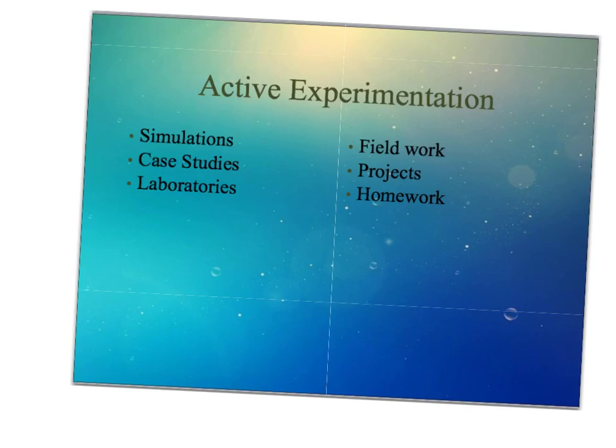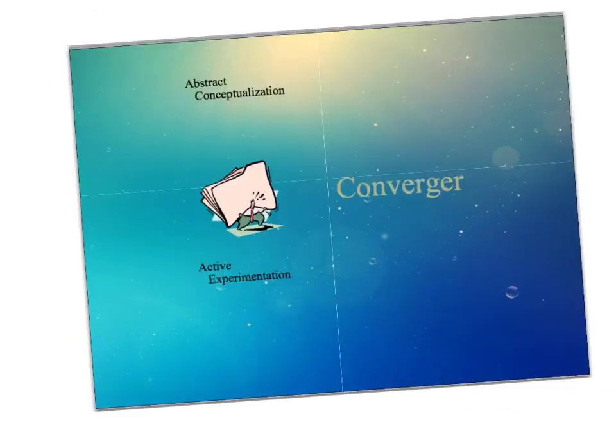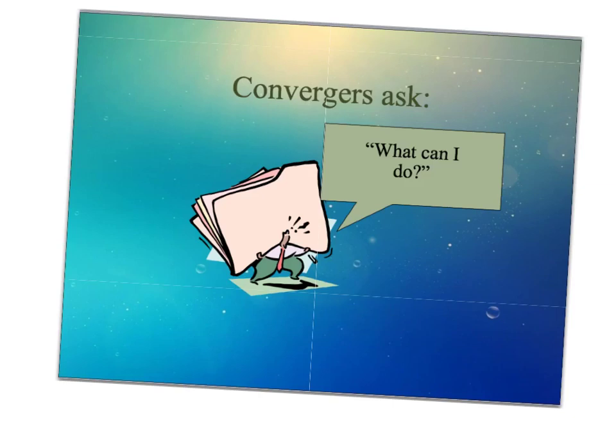Active experimentation examples include simulation, case studies, laboratories, fieldwork, projects, and homework. You may think of another one — come back and talk to us about that. Looking at abstract and active together, these cluster as convergers. Converging means to meet or join together — planning and putting everything together. Convergers ask: what can I do? What can they do to support their learning cycle? Bring your answer to the lesson.